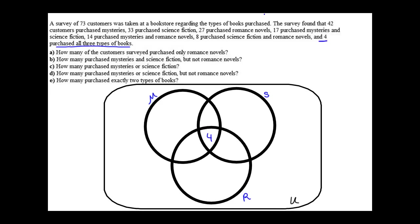Then we're going to look at the regions that are intersections of two sets — these three regions. Looking back in our problem, 8 purchased science fiction and romance novels. So the intersection between science fiction and romance novels needs to have a total of 8. We've already accounted for 4, so we need 4 more, so that entire intersection equals 8.